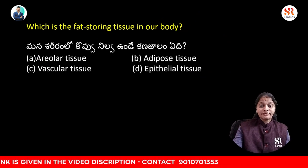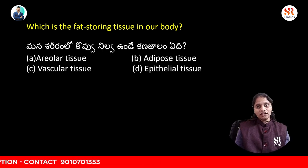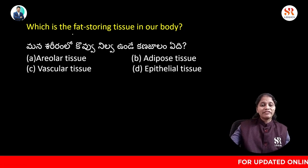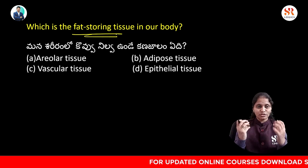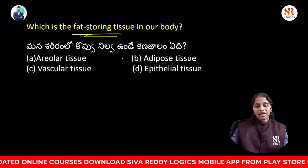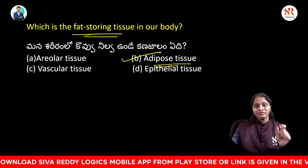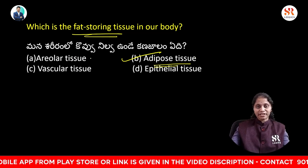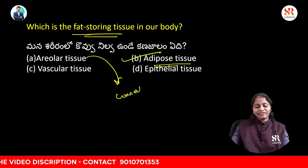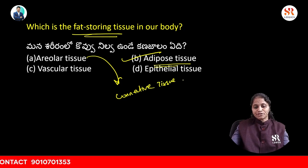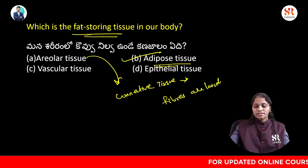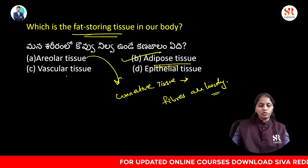Which is a fat-storing tissue in our body — areolar tissue, adipose tissue, vascular tissue, or epithelial tissue? The answer is adipose tissue, which is the fat-storing tissue in our body. Among the remaining tissues, areolar tissue is a connective tissue in which fibers are loosely arranged in a net mesh work.